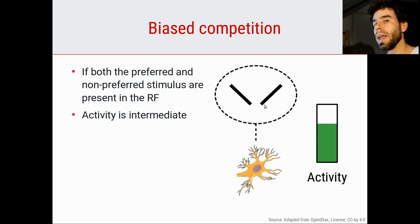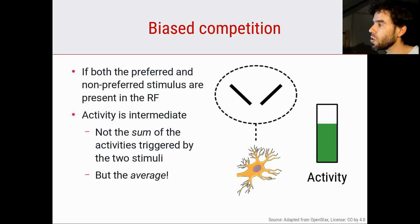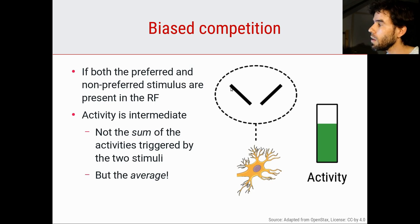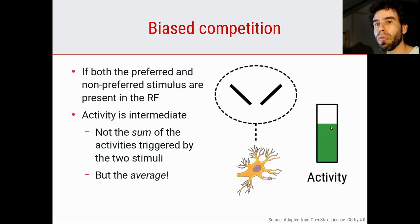What happens if we present both the preferred stimulus and the non-preferred stimulus in its receptive field? You might think the activities add up, so the neuron fires even more — the sum of the activities each stimulus elicits on its own. But that's not the case. Activity is intermediate and is not the sum of the two activities; rather, it is approximately the average. The presence of the non-preferred line segment drives the response to the preferred line segment down, and the two stimuli are kind of mutually inhibitory, resulting in an intermediate firing rate.